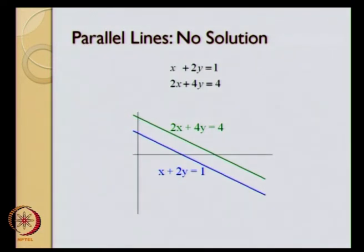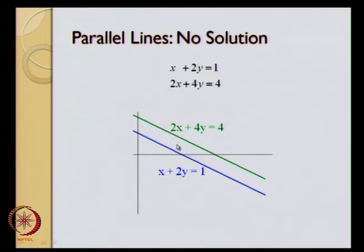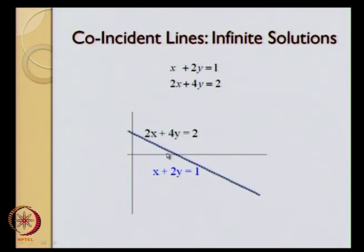Let us take a couple of examples. The first equation was x plus 2y equal to 1. If the second equation is written as 2x plus 4y equal to 4, these two lines are parallel to each other, so there is no point of intersection and these two equations do not have any solution. But if we write the second equation as 2x plus 4y equal to 2, what we are doing is multiplying the first equation by 2, making both lines coincident, and we will have an infinite number of solutions.